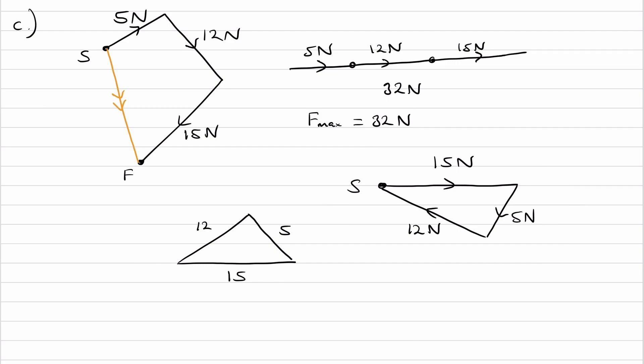Now in this case, the start point and the finish point are in the same exact spot, the resultant force will therefore be zero. The distance from the start to the finish would be zero. So then our resultant force would be zero, and therefore F minimum is zero.